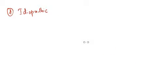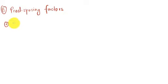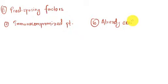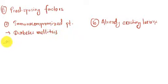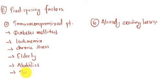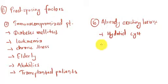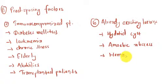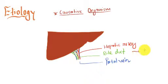The last is idiopathic cause. The predisposing factors for pyemia include immunocompromised patients — such as those with diabetes mellitus, leukemia, chronic illness, elderly patients, alcoholics, and transplanted patients — and already existing lesions such as hydatid cyst, amoebic abscess, and hematoma.